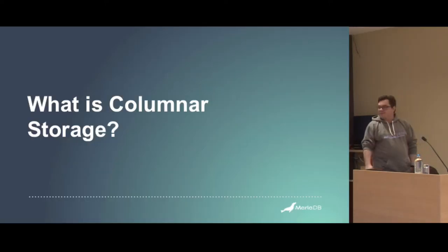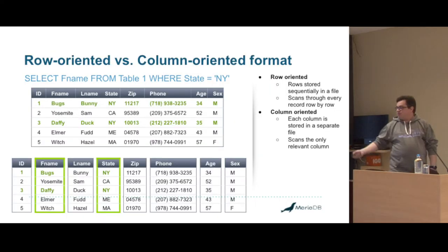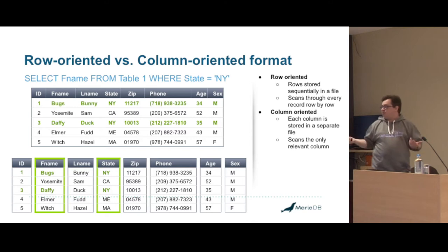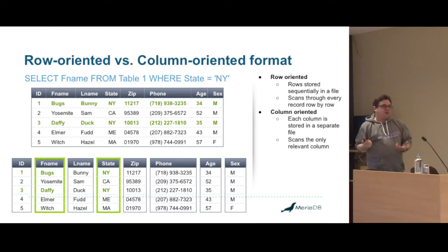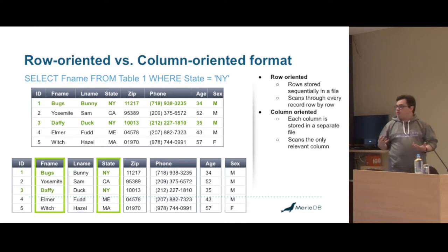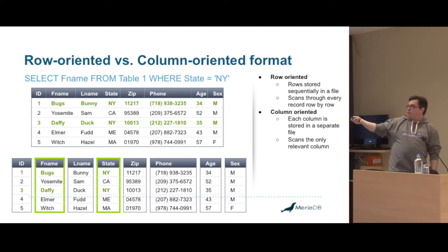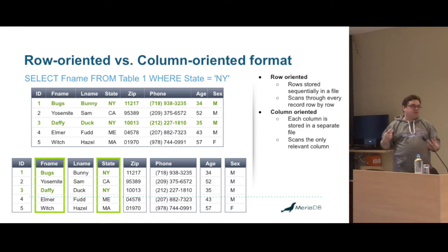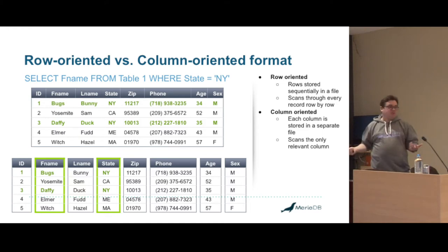I'm here to tell you about ColumnStorage. What is ColumnStorage? Basically, storing things as columns instead of rows. Usually you'd have a different file for every single column in a particular table instead of storing the table as just one file. The whole reason you would do this is to cut down the amount of data you're reading when doing queries. On a row-based system you'd have to read entire rows, whereas for a column-based system you only need to worry about two particular columns.